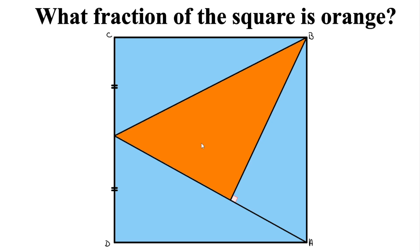Now since we want to find out what fraction of the square is orange, it will be simpler to let the sides of our square be equal to 1. All we would need to do is find the area of our orange triangle to find out what fraction of the square is orange. So let the side equal to 1, so that means our square would have an area of 1 square unit. Now let's see how our triangles were constructed.